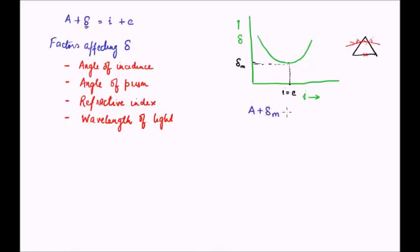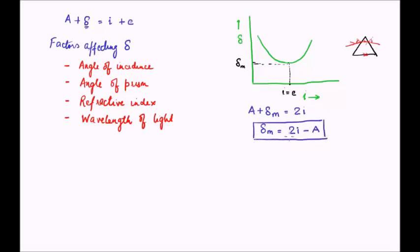That is the condition of minimum deviation. Now let us replace this condition into the relation. What we will find is that A plus delta-minimum is equal to 2 times I, which means the delta-minimum value is 2 times angle of incidence minus the angle of prism. This is another very important relation — a key takeaway from today's lecture: what is the minimum angle of deviation and what is the condition for it.